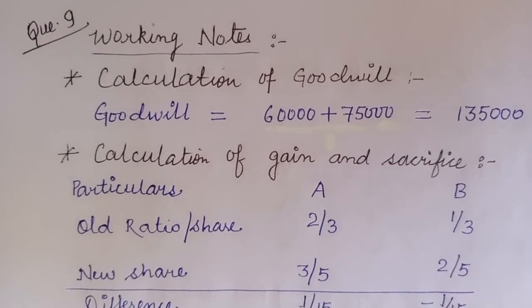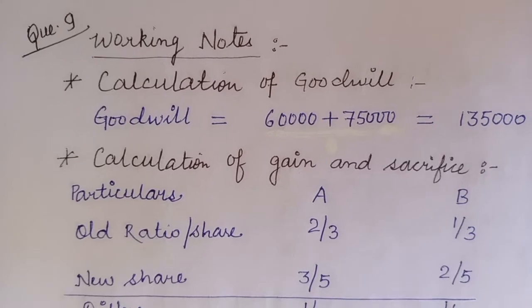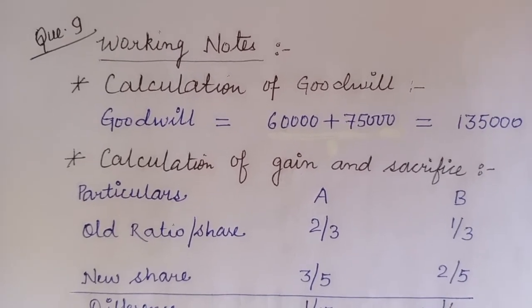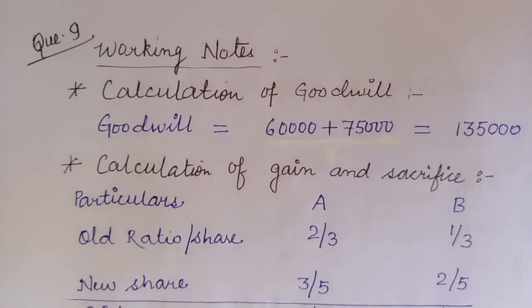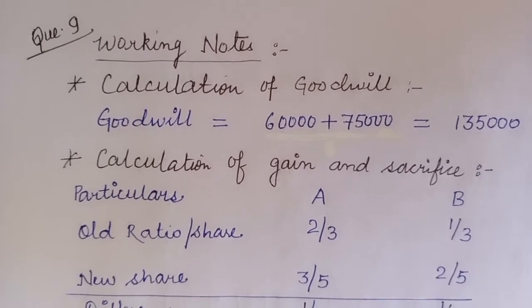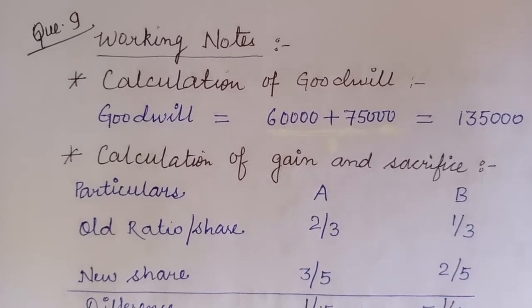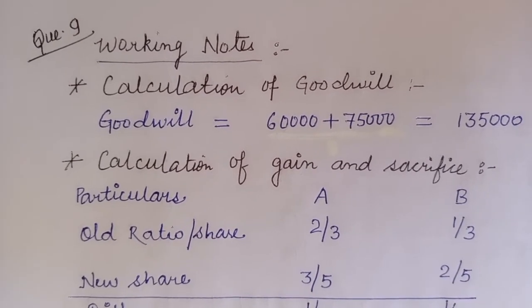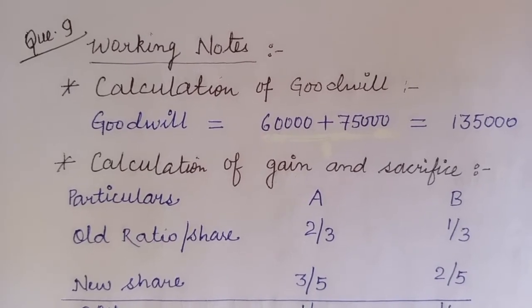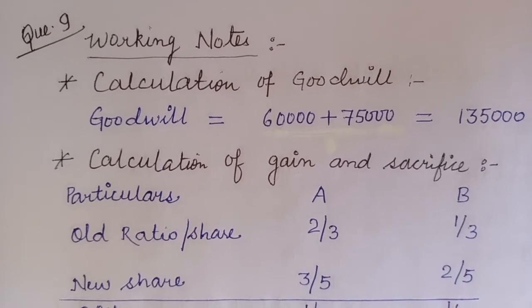Question number nine: A and B are partners in a firm sharing profits in ratio 2:1. They decided that with effect from 1st April 2019, they would share in the ratio 3:2. This is a change in profit sharing ratio, but this decision was taken after the profit for the year ended 31st March 2020 of ₹90,000 was already distributed in the old ratio.